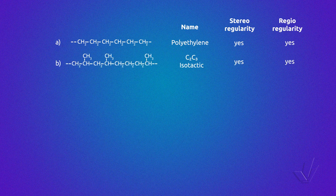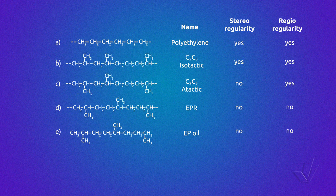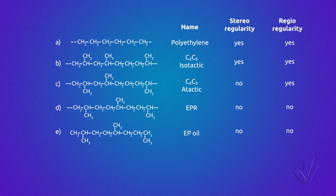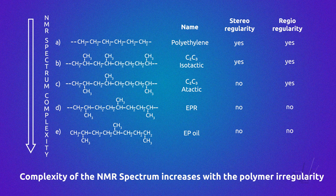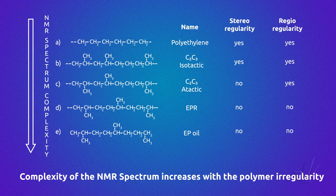In the presence of other monomers, such as propene, which has three different carbon atoms where one is asymmetric, the number of peaks increases. This increase not only depends on the type of monomer, but also on the way that this new monomer is inserted in the polymer chain. The complexity of the carbon-13 NMR spectrum increases from a stereoregular copolymer, which can be isotactic or syndiotactic, to a stereoirregular atactic, and increases still more for a regioirregular copolymer where the propene can have inversions.